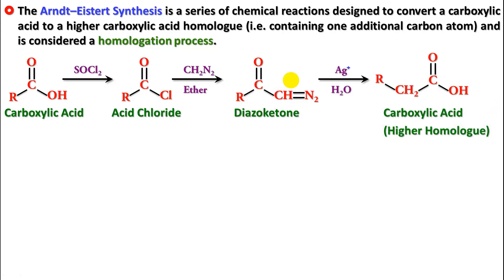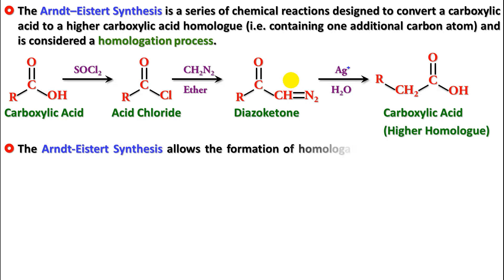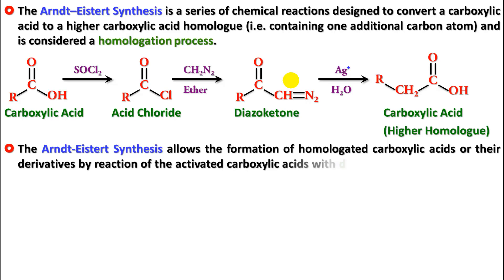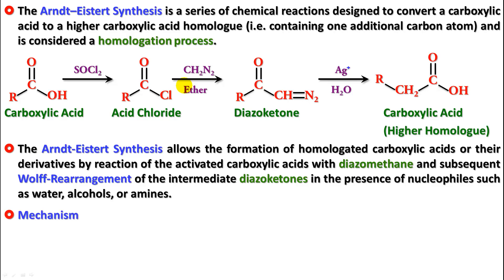The Arndt-Eistert synthesis allows the formation of homologated carboxylic acids or their derivatives by first reacting the activated carboxylic acid — in the form of acid chloride — with diazomethane to produce a diazo ketone. The subsequent rearrangement step is called the Wolff rearrangement.